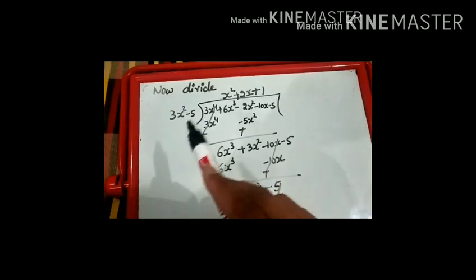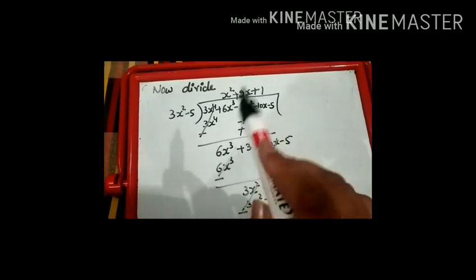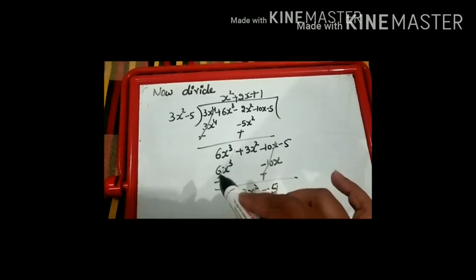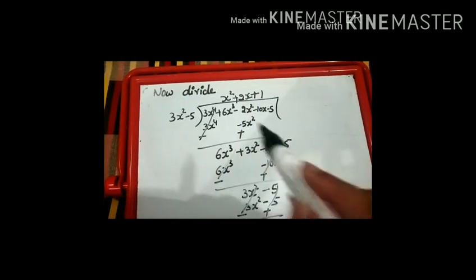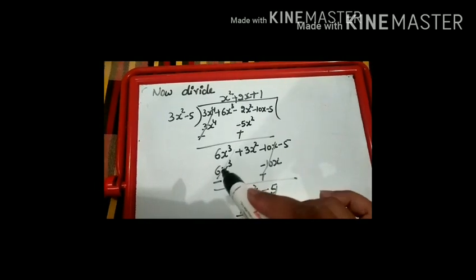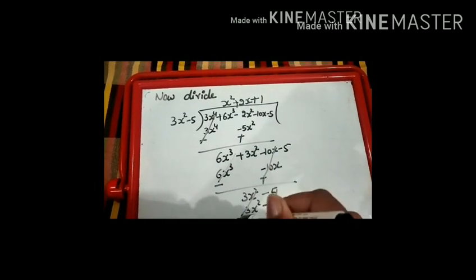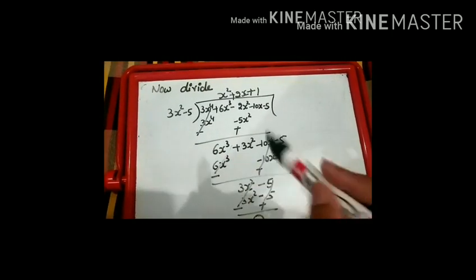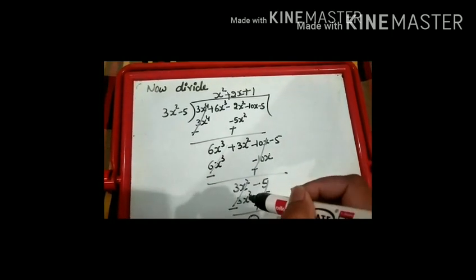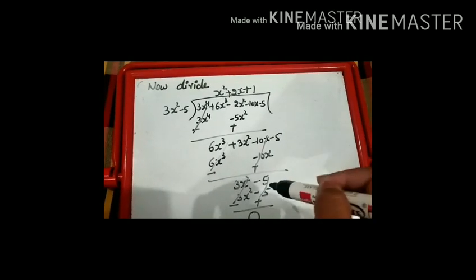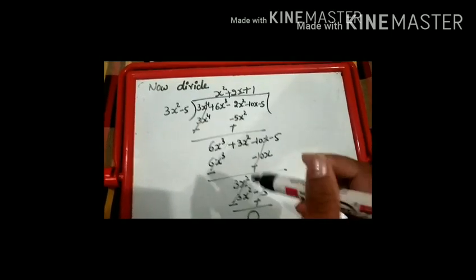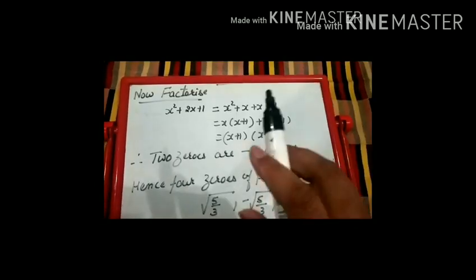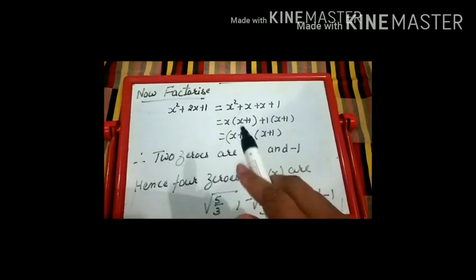For 6x³, we have 3x², so we multiply 3x² by 2x to get 6x³. Then multiply 2x by -5 to get -10x. Sign change: both terms cancel. We are left with 3x² - 5. Multiply 3x² by 1 to get 3x², then 1 × -5 = -5. Sign change, and both terms cancel. Remainder is 0, but we still need the remaining two zeros.